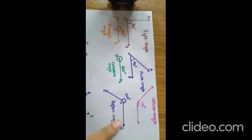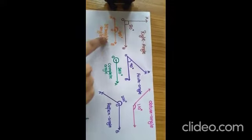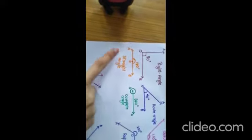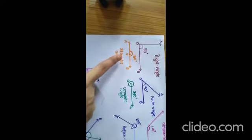Obtuse angle, which is greater than 90 degrees but less than 180 degrees. This is straight angle. It is exactly 180 degrees.